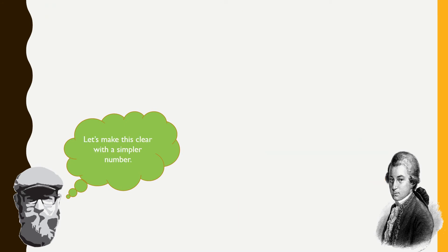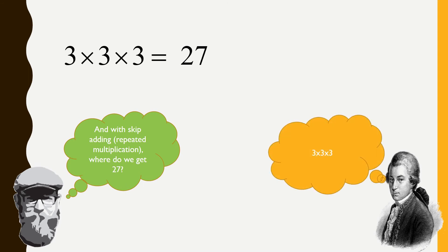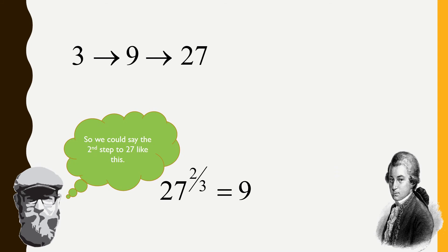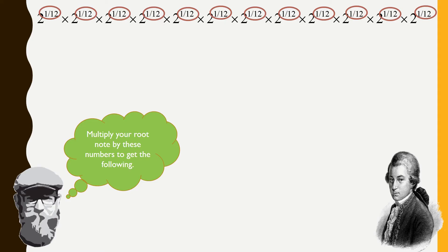Even though we tried to keep all the numbers simple, it's still kind of ugly. So let's start with something easier, like 27. Using skip adding — repeated multiplication — how do we get to 27? We could do it with 3: 3 times 3 times 3 is 27. So the steps look like this: 3 times 3 is 9, times 3 is 27. If you wanted to know what is the second step out of 3 required to arrive at 27, it's just 9.